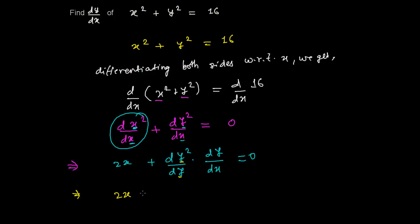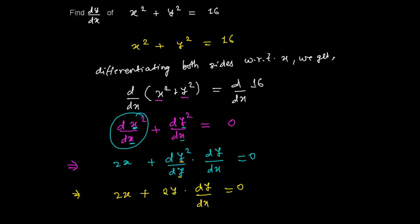So what we get is: 2x plus the derivative of y² with respect to y, which is 2y, times dy/dx, equals 0. Now we need to move the 2x to the right side, so we get 2y times dy/dx equals −2x.